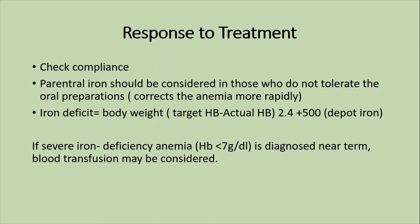The formula for iron deficit to calculate IV iron requirement is: body weight × (target hemoglobin minus actual hemoglobin) × 2.4, plus 500. If severe iron deficiency anemia — hemoglobin less than 7 grams per deciliter — is diagnosed near term, blood transfusion may be considered.